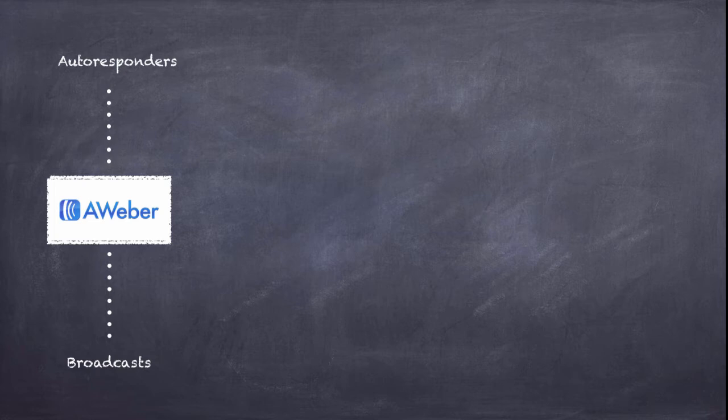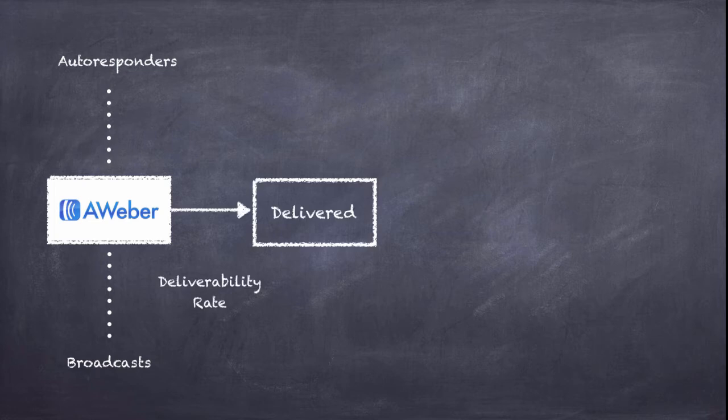When you send an email, there are a few things involved. The first is whether your email actually gets delivered. A lot of emails nowadays go to the spam folder, or sometimes can't be delivered at all — maybe it's a wrong email address, the person no longer uses it, the inbox is full, or the biggest reason: the email gets flagged as spam and never reaches the inbox. This is called the deliverability rate.